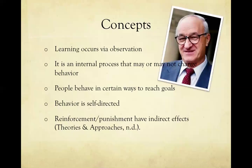The main concepts of social learning theory are that learning occurs via observation, it is an internal process that may or may not change behavior, people behave in certain ways to reach goals, behavior is self-directed, and reinforcement and punishment have indirect effects.